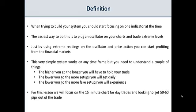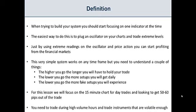In this lesson we will focus on the 15-minute chart for day trades and we will be looking to get 50 to 60 pips out of every trade. We are also going to look for at least a 1-to-2 risk-to-reward ratio. You need to trade during high volume hours and trade instruments that are volatile enough — trade forex during the London and New York sessions, or stocks during the New York session. If you live in Australia or Asia, it's fine to trade forex during the Australian session, but focus on the Asian pairs.